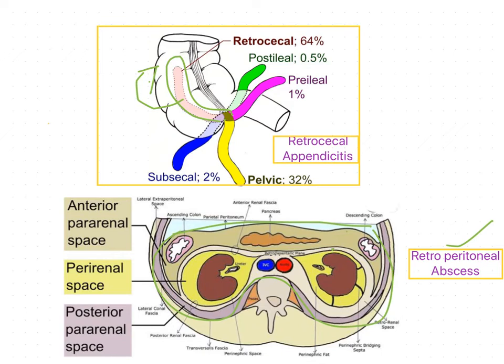These are all the key points about the renal angle and its clinical importance. In the next session we are going to discuss other clinical anatomical aspects of the kidney, such as congenital anomalies like polycystic kidney, as well as renal calculi in detail, chronic renal failure, etc. Thank you.